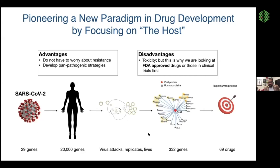What we wanted to do was find all the human proteins that the virus would need to infect our cells. One approach we employed was a systematic affinity tag purification mass spec-based approach, and doing this we identified over 300 proteins. This allowed us to narrow down to 69 different drugs and compounds that we thought would target at least one of these proteins and could potentially have an antiviral effect.